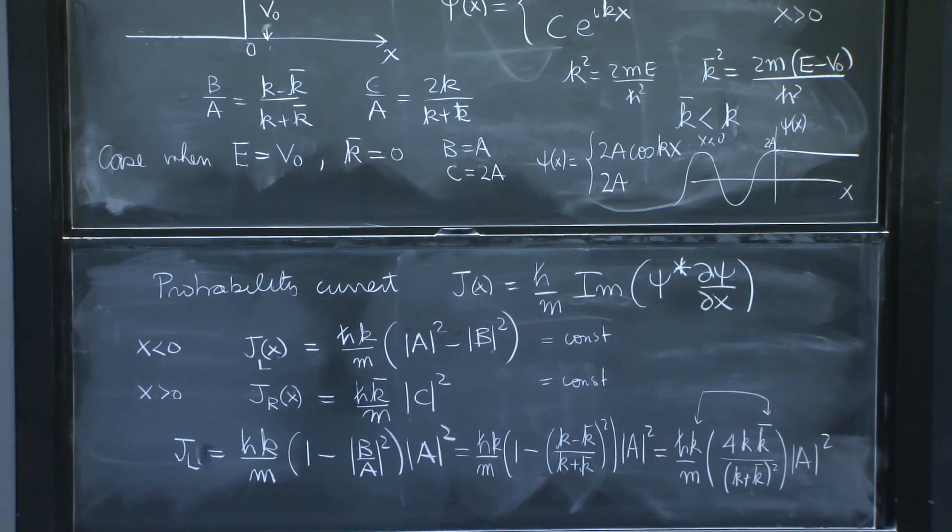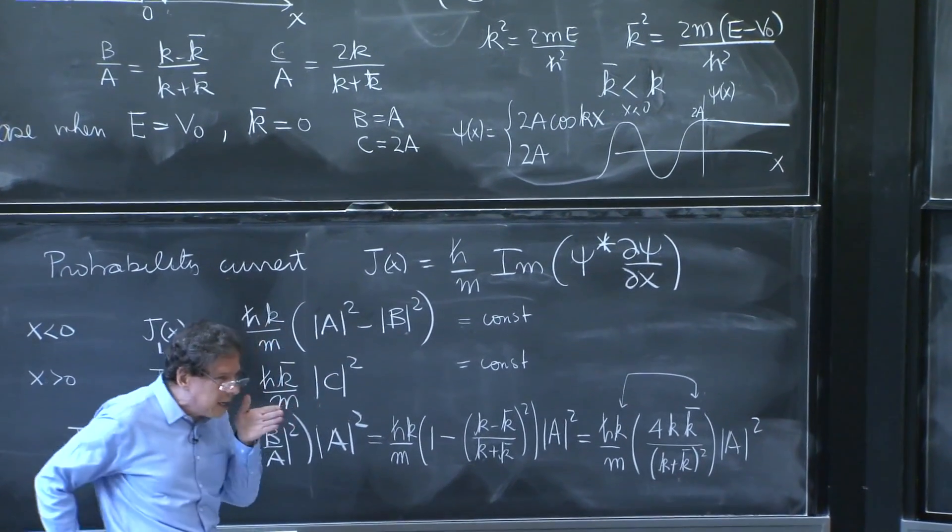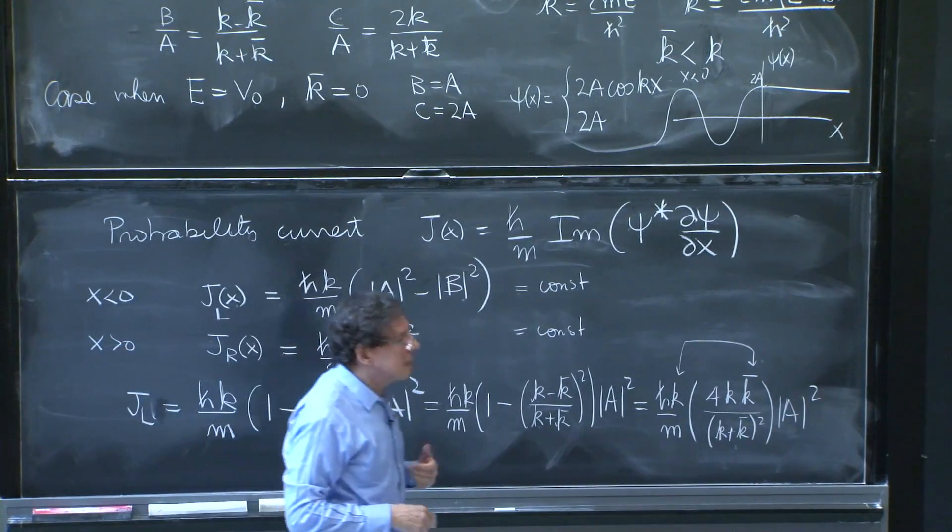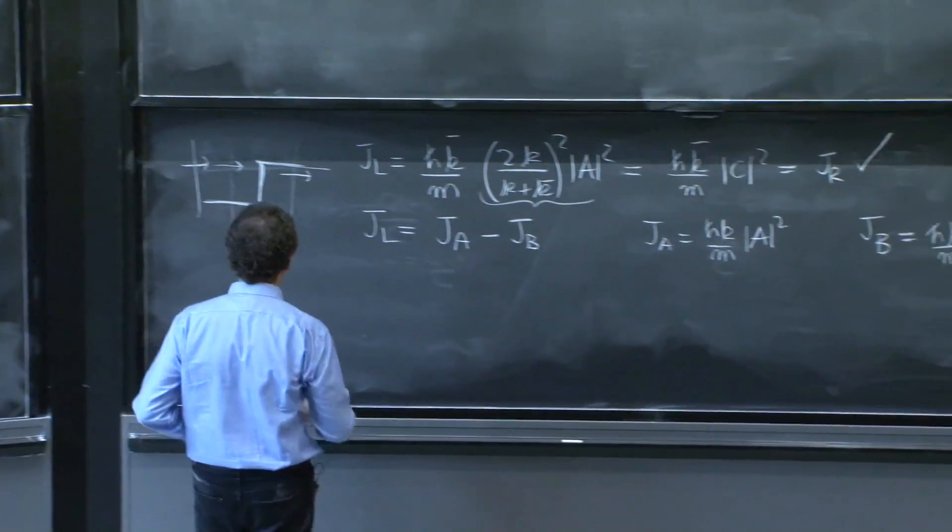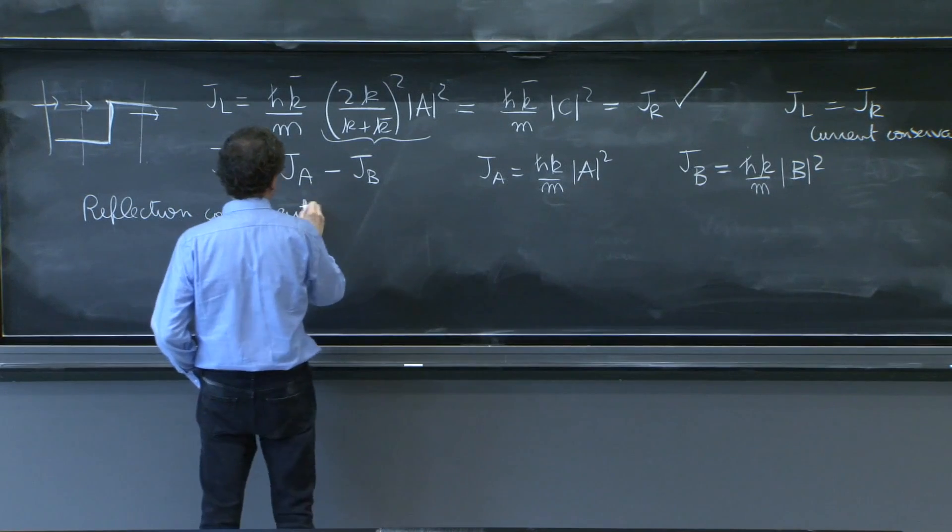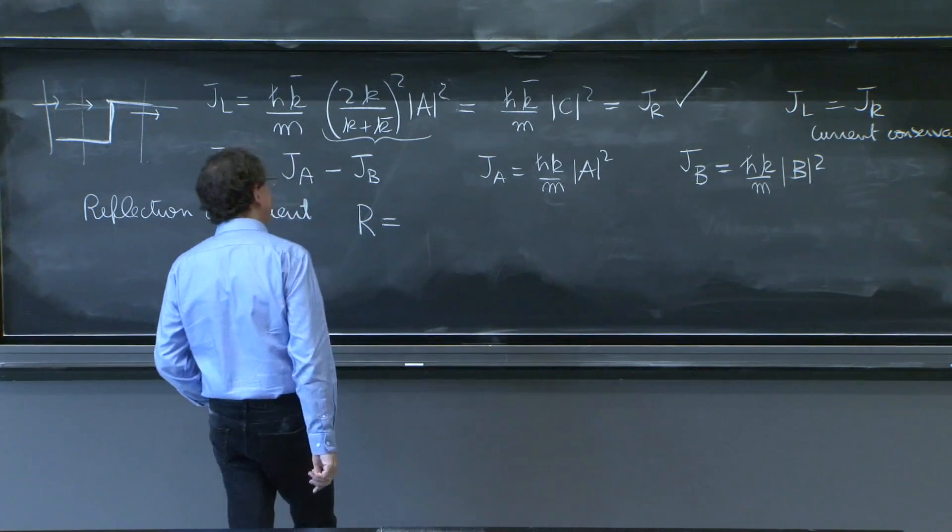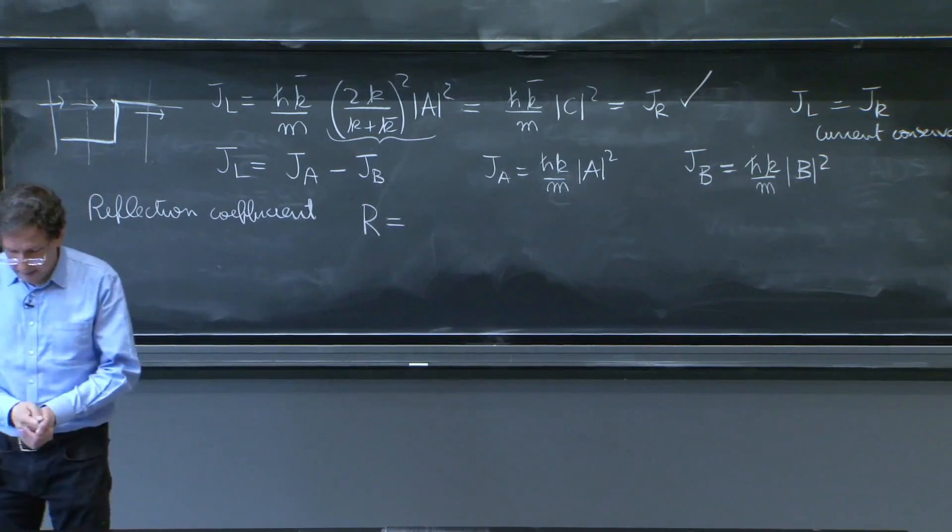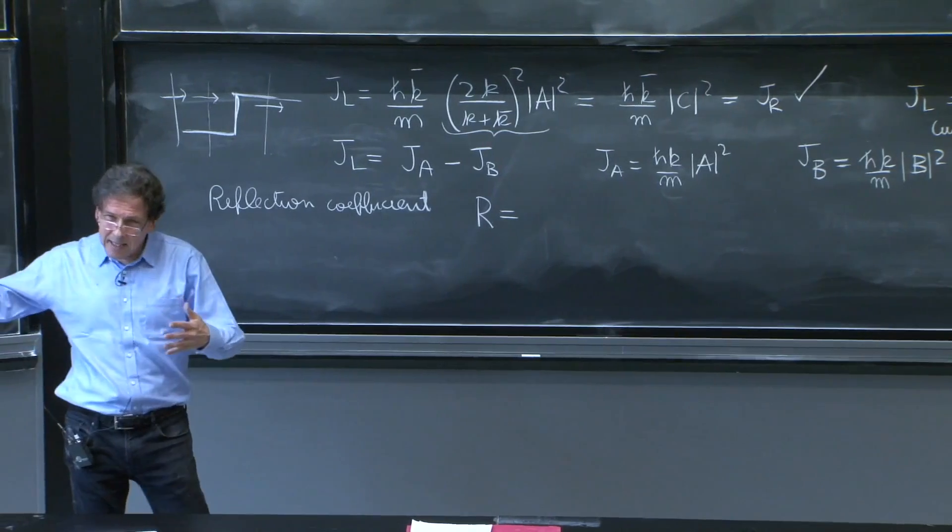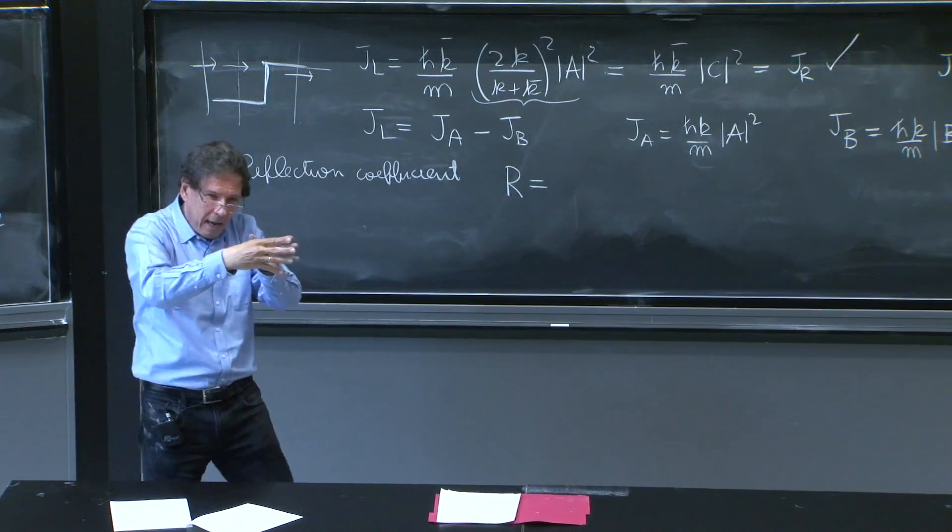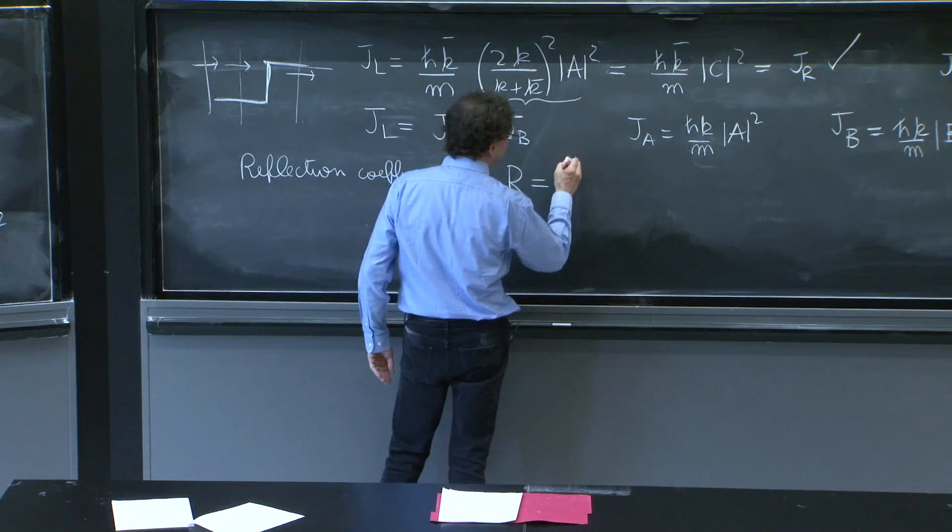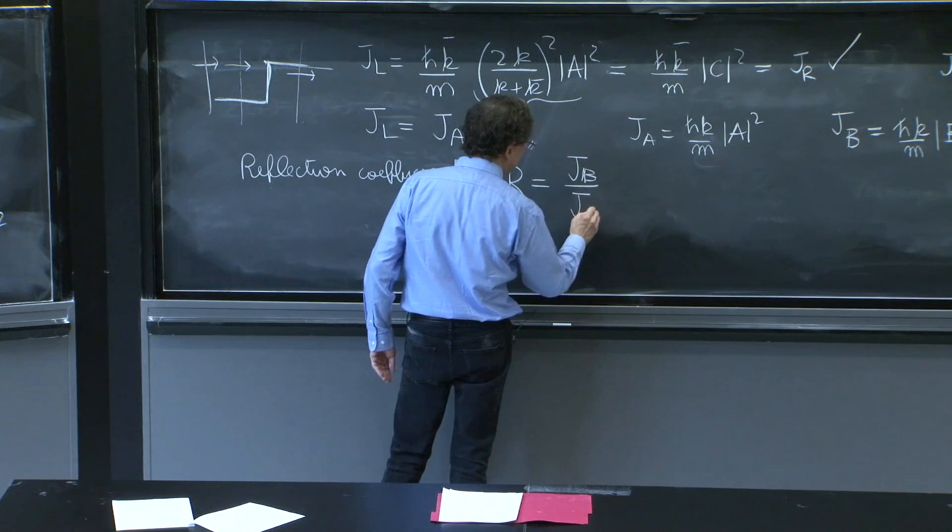So that's very nice. There's no interference between these two terms. We can really think of a current that is associated to the incoming wave and a current associated with the reflected wave. So this suggests how you should define a reflection coefficient r would give me the amount of current I get reflected compared to the amount of current that there is incident. You see, the incident current is going to be partially reflected and partially transmitted. So an idea of a reflection is the value of the reflected current divided by the incident current.